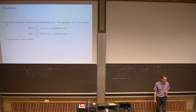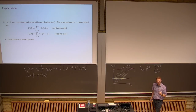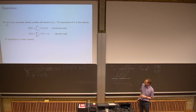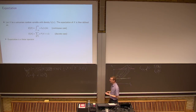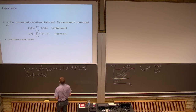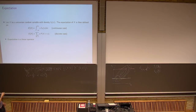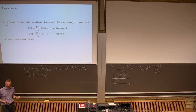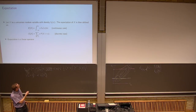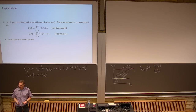For expectation — I don't know how much you've seen this, but some of you have probably seen it to some extent. In the univariate case, for a random variable with density f_x of x, the expectation is defined as the integral over the outcome space of x times the density of x. In the discrete case it's just a sum, but it's the same thing.